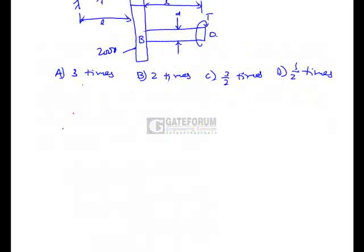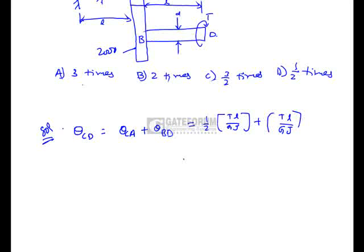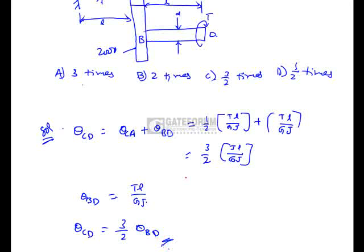The angle of twist, the total angle of twist in this case, is θ_CD = θ_CA + θ_BD. Now θ_CA is half of TL by GJ, and θ_BD is just TL by GJ. So the total angle of twist is 3/2 times TL by GJ. So the right option is C, C is the right answer.